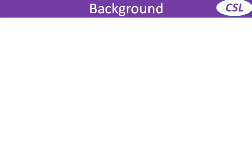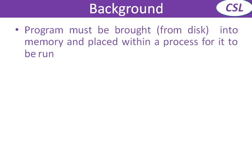First we will see background, which is a kind of pre-requisite for learning the memory management system. The first point is: a program must be brought into memory and placed within a process for it to run. We know the program is stored in the hard disk. If you want to run that program, it is brought from the hard disk and loaded into the memory — primary memory, RAM — and then it generates a process. All the instructions are carried out in primary memory only.